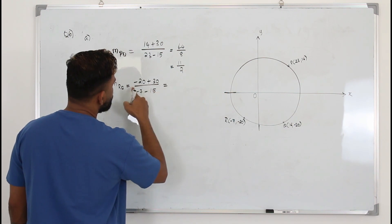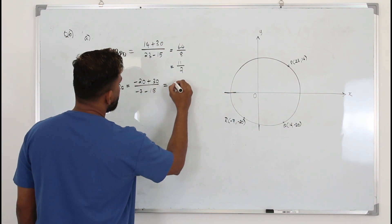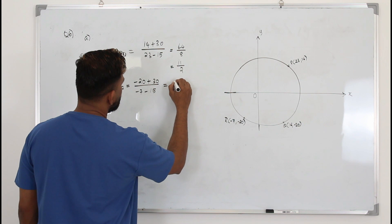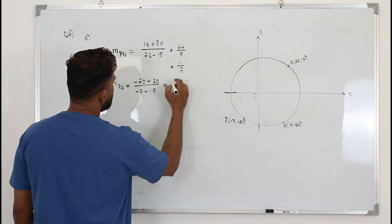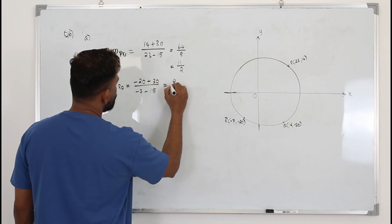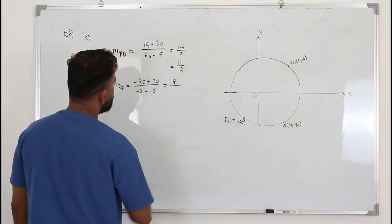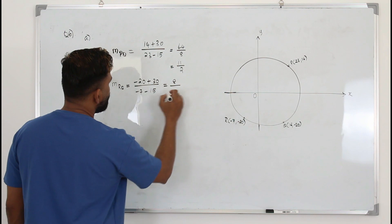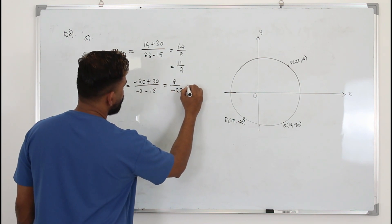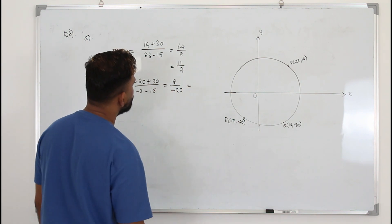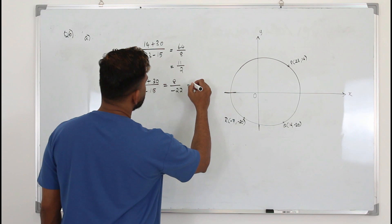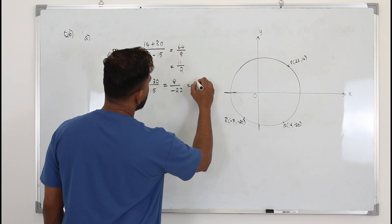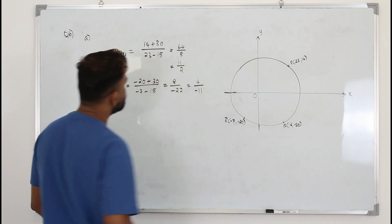For slope of RQ, applying (Y2 − Y1) / (X2 − X1) gives 8 over −22, which simplifies to 4 over −11.